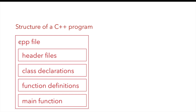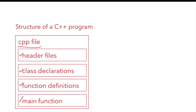Finally, the structure of a C++ program: we start with header files, then one or more class declarations, followed by one or more function definitions, and finally the main function. This is a typical structure of a C++ program, and in upcoming lectures we are going to see many examples.